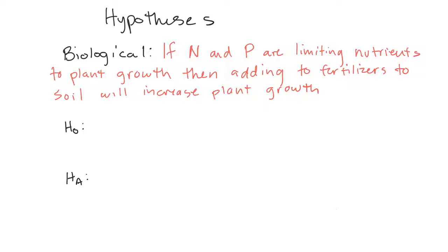A good biological mechanism is: if nitrogen and phosphorus are limiting nutrients to plant growth, then what's our prediction? Then adding fertilizers to soil will increase plant growth. If the amount of nitrogen or phosphorus in normal soil is limiting plant growth, then if we add nitrogen to that soil, they should grow more. Does that make sense?